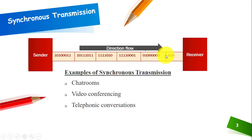The sending device and the receiving device are properly synchronized. We have a few examples of synchronous transmission: chat rooms, video conferencing, and telephonic conversation — these are all examples of synchronous transmission.